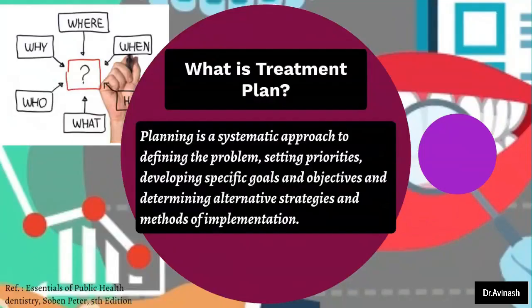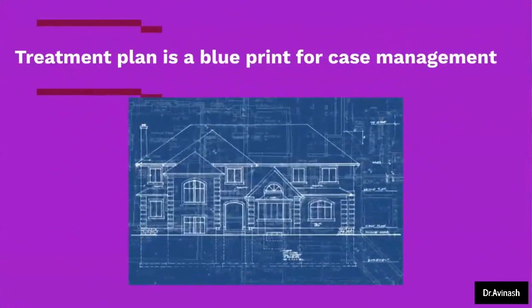Let us understand what a treatment plan is. Planning is a systematic approach in defining the problem, setting priorities, developing specific goals and objectives, and determining alternative strategies and methods of implementation. Treatment plan is a blueprint for case management — just like when we build a house, we have a blueprint which tells us when to build what and how to approach the building process. Similarly, a treatment plan is a blueprint for how to approach the treatment, which treatment to be done first and which next, and what would be the probable outcome of the treatment.